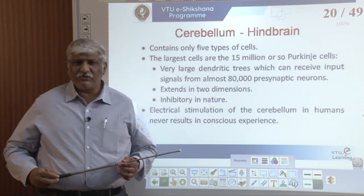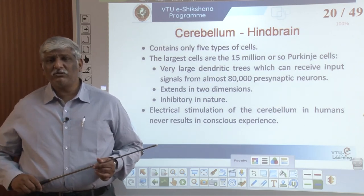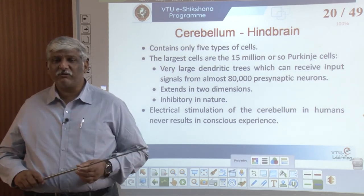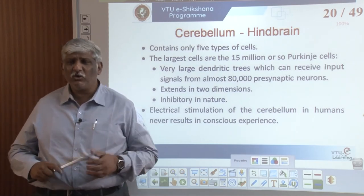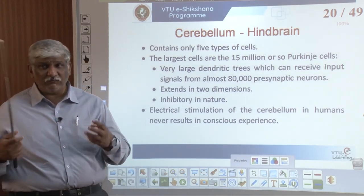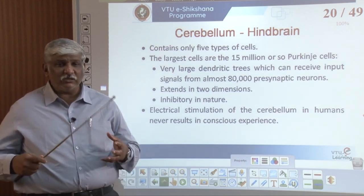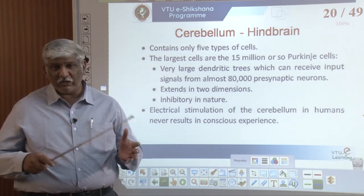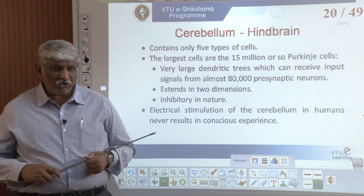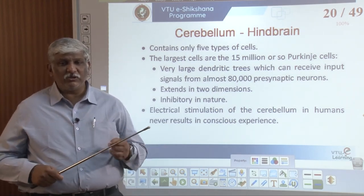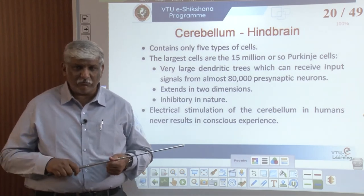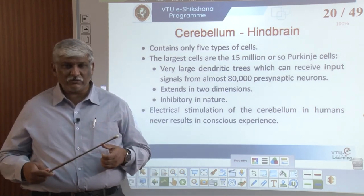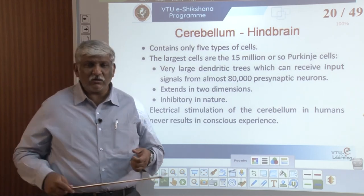The cerebellum contains five types of cells. The largest are approximately 15 million Purkinje cells, with a very large dendritic tree that can receive input signals from almost 80,000 presynaptic neurons. Each decision is taken from inputs given by so many neurons. Electrical stimulation of the cerebellum in humans never results in conscious experience.